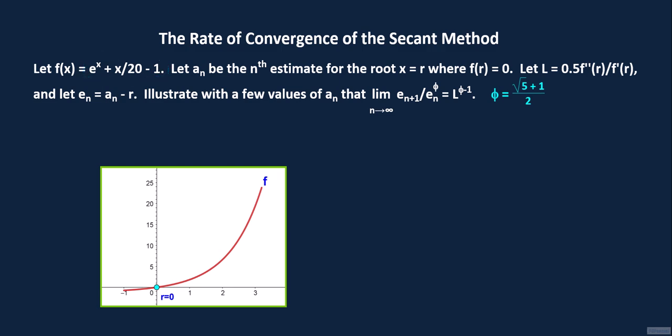What we are going to do in this lecture is generate the first few estimates a sub n of the root r equals 0. Then, we find the corresponding error values, e sub n, which we define as a sub n minus r. Of course, for this example, since r equals 0, e sub n equals a sub n. In general, the absolute value of e sub n is the absolute error in using a sub n as the estimate for the root x equals r.